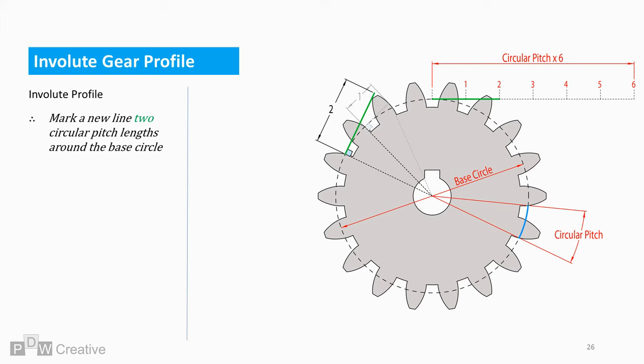Mark a new line two circular pitch lengths around the base circle. Draw a straight line two circular pitch lengths at 90 degrees or perpendicular from the new mark.